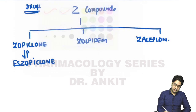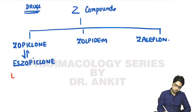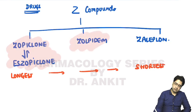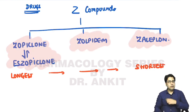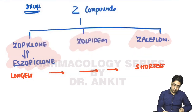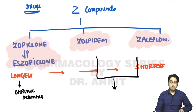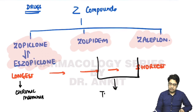Comparing these drugs: zopiclone is the longest-acting drug, while zaleplon is the shortest-acting drug. Because of this, zopiclone is the preferred drug in chronic insomnia.